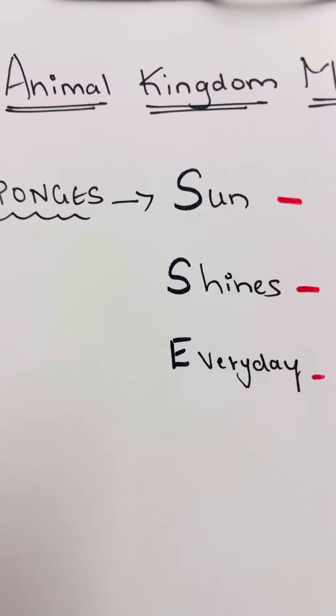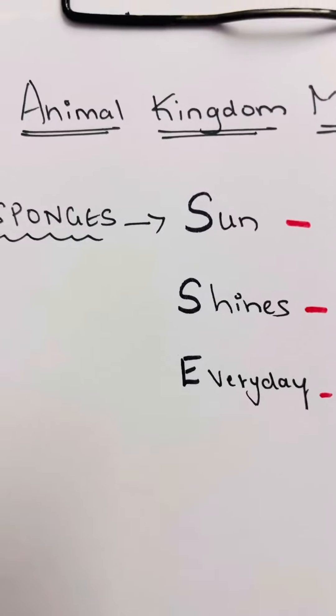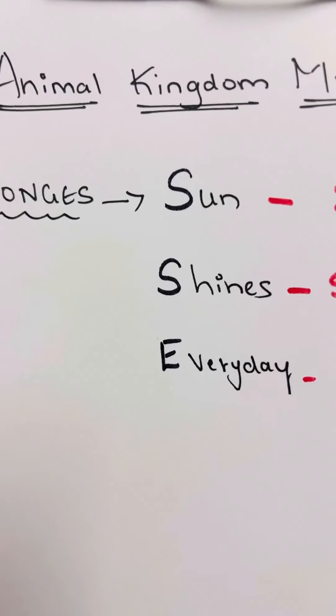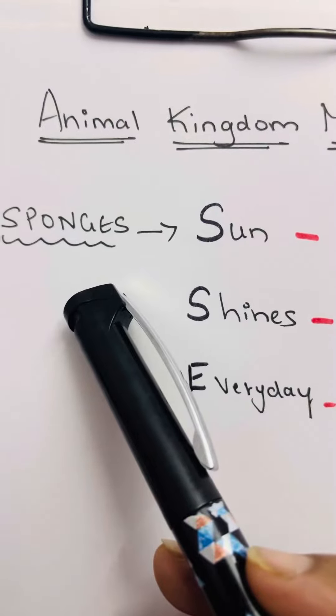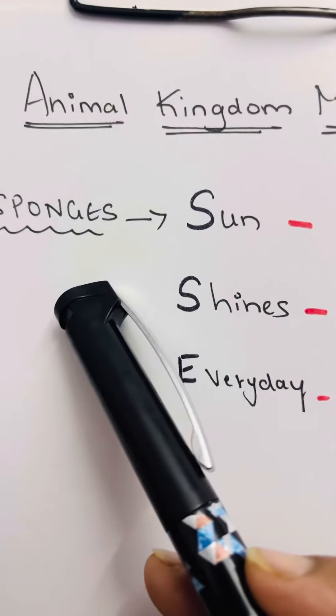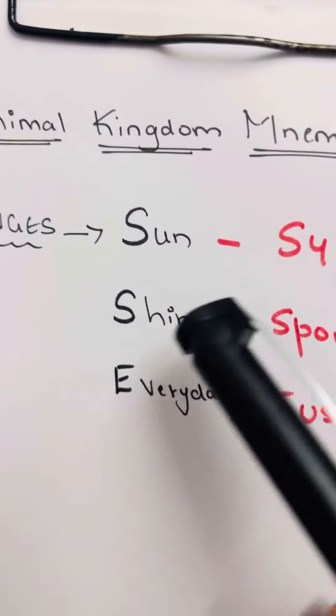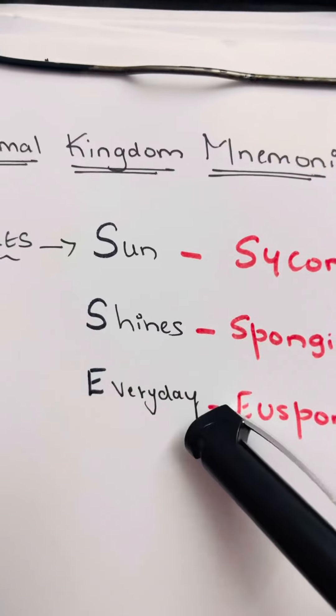It'll be difficult to remember the examples of different phyla, right? So here we'll see the mnemonic to remember the examples of sponges, that is phylum Porifera. The mnemonic is 'Sun shines every day.'